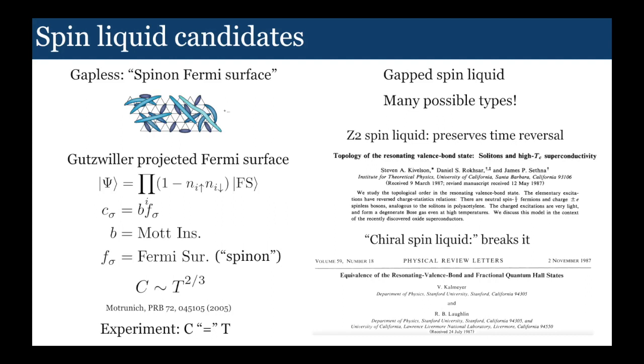The other competing class are gapped spin liquids. There's many types here. One potential is Z2 spin liquid which preserves time reversal, but the one I'm going to be discussing is the chiral spin liquid which spontaneously breaks time reversal. This was first proposed by Kalmeyer and Laughlin, where they argued you could understand this spin liquid as the analog of a fractional quantum Hall state.